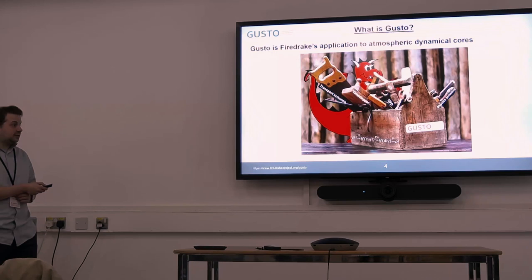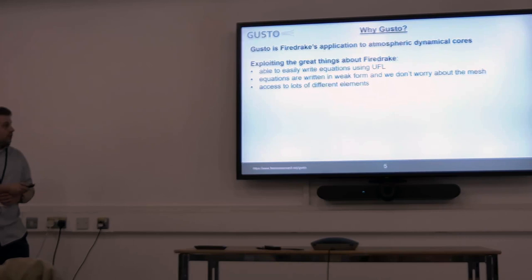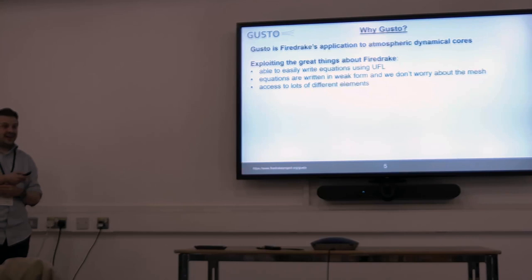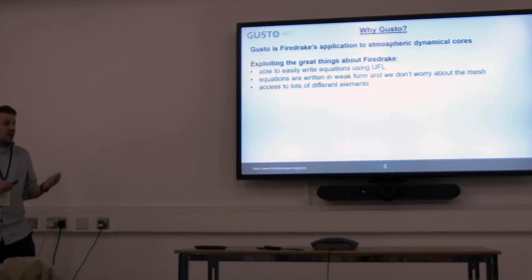Why would you want to use Gusto? Basically because FireDrake is really helpful and we want to exploit those things. It's really good to be able to write our equations in code just like it looks in the maths. It's really great to write things in weak form and not to worry too much about the details of the mesh — and I can contrast this with my experience of coding basically the same equations in the Met Office's model, which is generally much more painful.